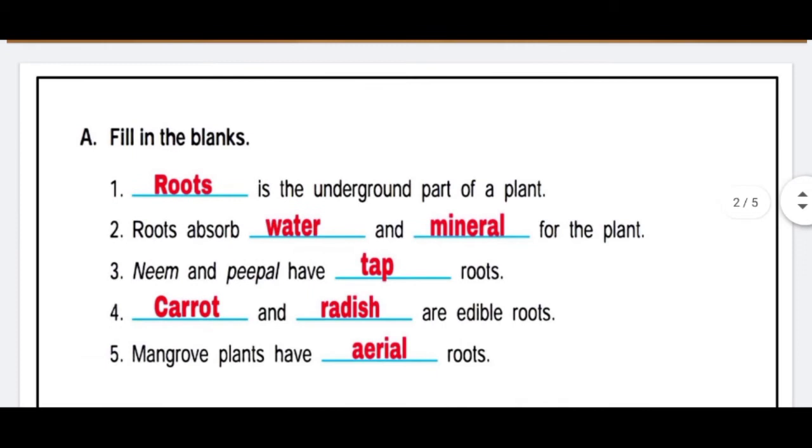Fill in the blanks. First one is: Dash is the underground part of the plant. The answer is Roots. Second one is: Roots absorb water and mineral for the plant. Third is: Neem and peepal have tap roots. Fourth one is: Carrot and radish are edible roots. And fifth is: Mangrove plants have aerial roots.